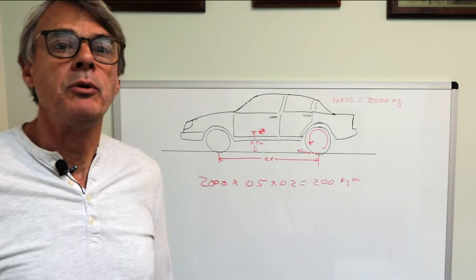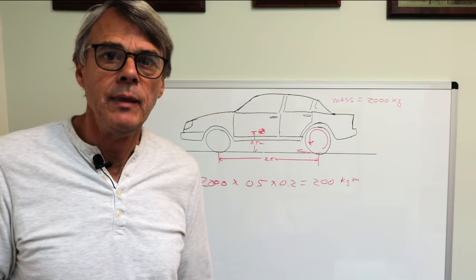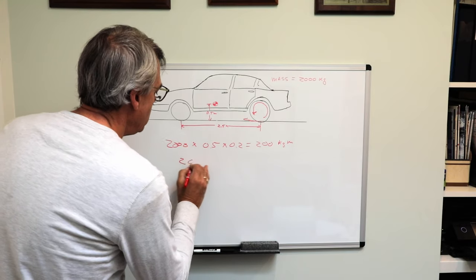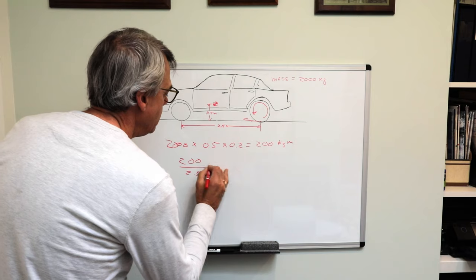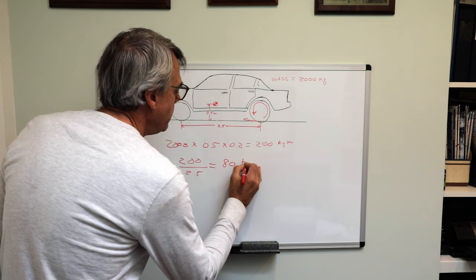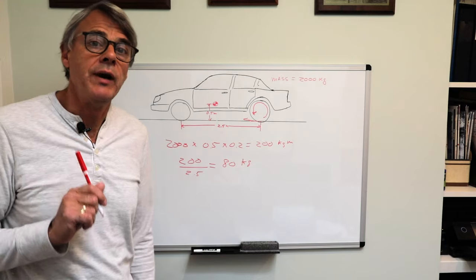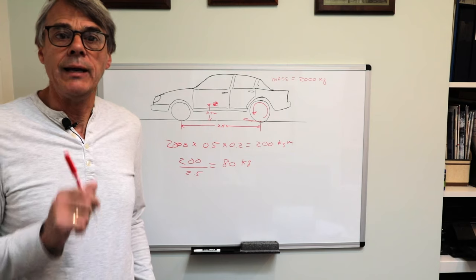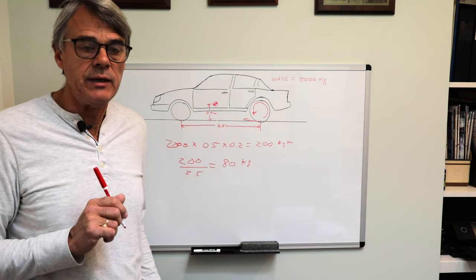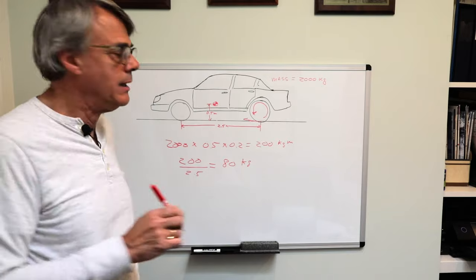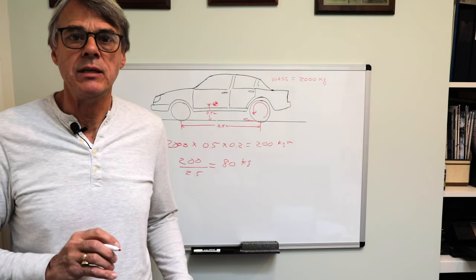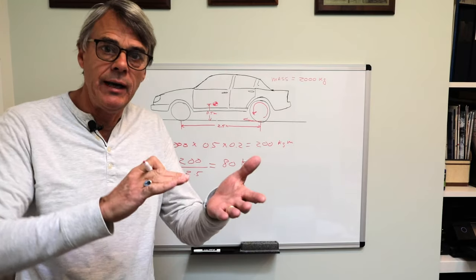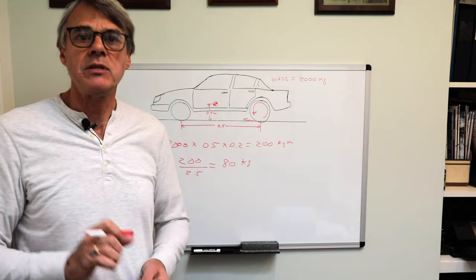I know that kilogram meters is not a proper unit of torque, but stay with me here because it's all going to come out in the end. We then divide this by the wheelbase and we get 80 kilograms. This is the weight transfer during acceleration. In other words, the front end will effectively get 80 kilograms lighter and the rear will effectively get 80 kilograms heavier. That extra weight pushes down on the springs in the back and makes the back squat down. This is why you see cars lift in the front end and squat down in the rear when they're pulling away from a stop.